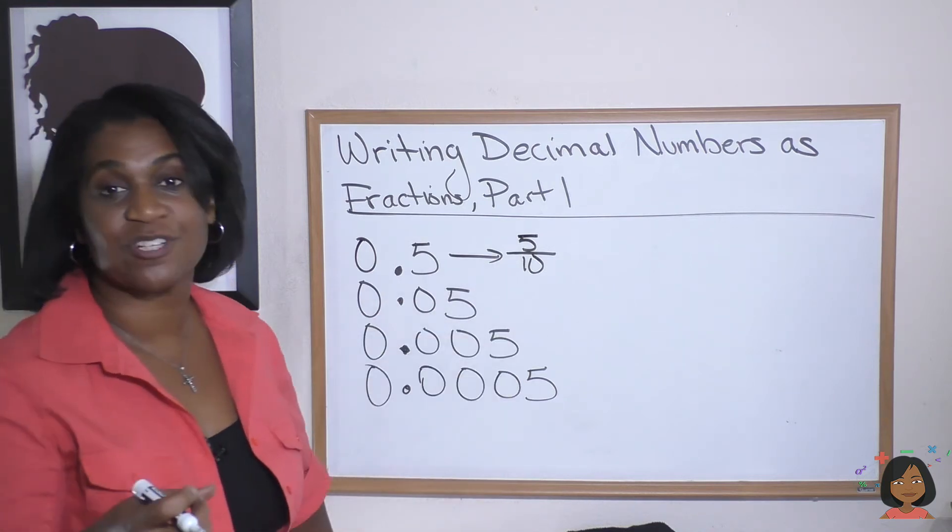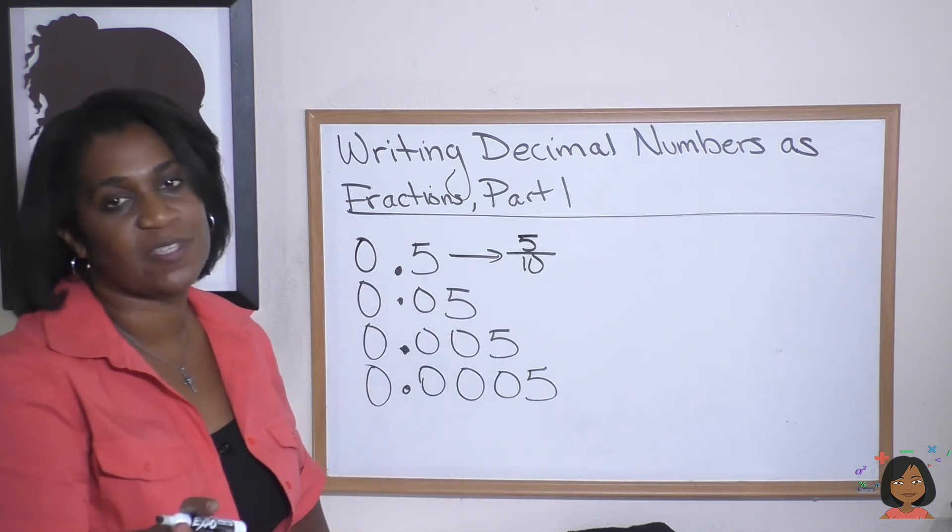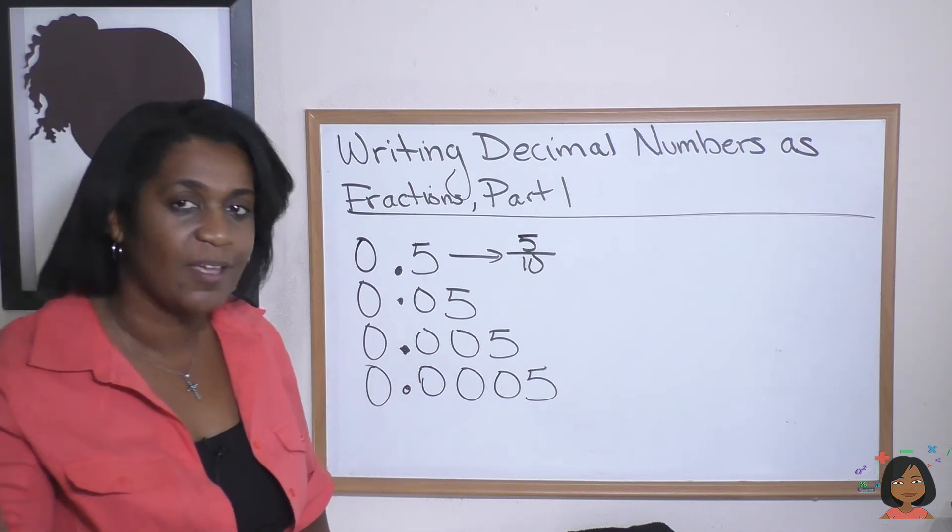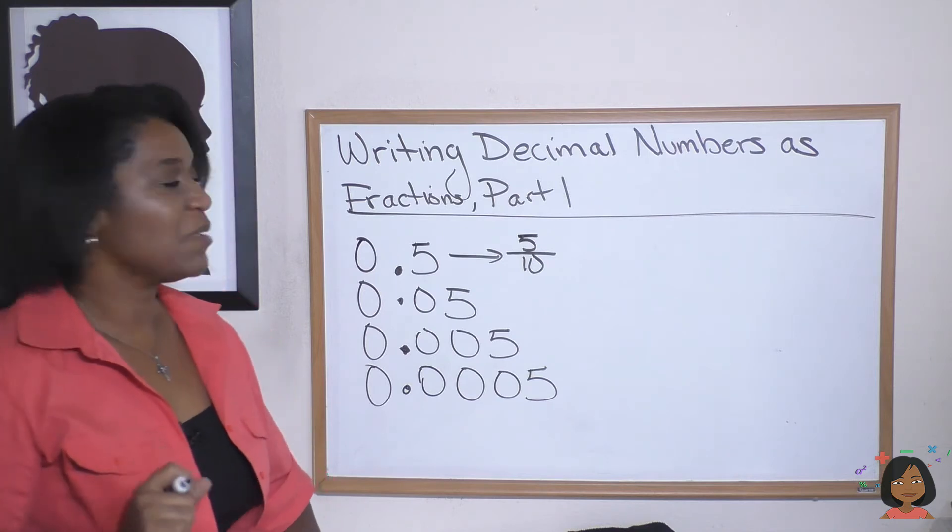Now generally, you know we don't keep our fractions unsimplified, but for the purposes of this just to show you how to write it, it's five over ten, and then we would simplify it to what? One half. Yes. Let's take a look at this one.